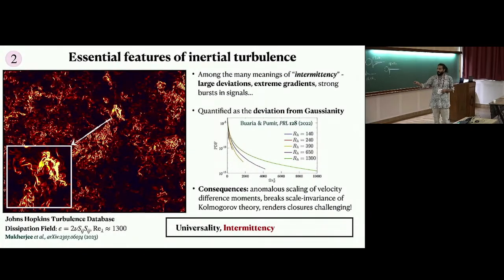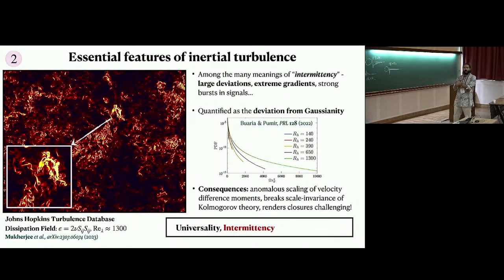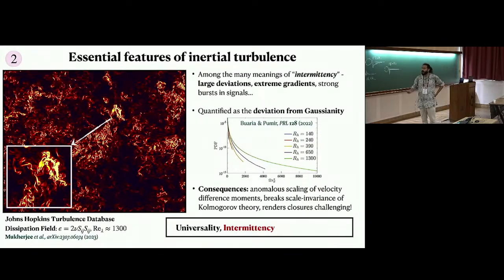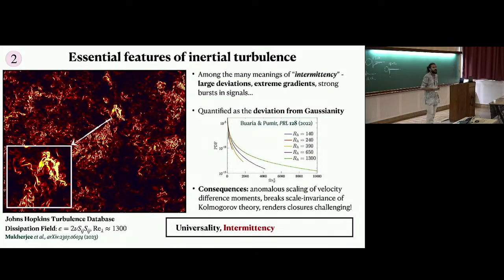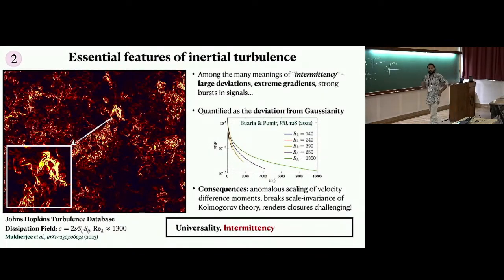Intermittency has been a main problem in turbulence theory because it leads to anomalous scaling of velocity moments, breaks scale invariance, and makes closures very difficult. If things were Gaussian, you could come up with simpler theories. But intermittency makes these theories challenging, which is why in engineering applications it's very hard to model turbulence in all its aspects.